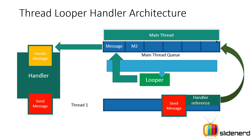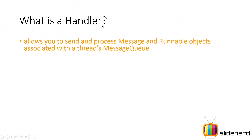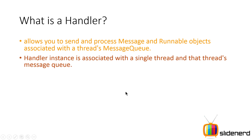We are going to use this to recreate the same download images app we did earlier using pure threads — this time using Handlers to see what changes. Before we start on the code, let's look at what the Handler is exactly. A Handler allows you to send and process messages and Runnable objects, and it can have two types of communication: Message objects or Runnable objects. The Handler instance is associated with a single thread and that thread's message queue.